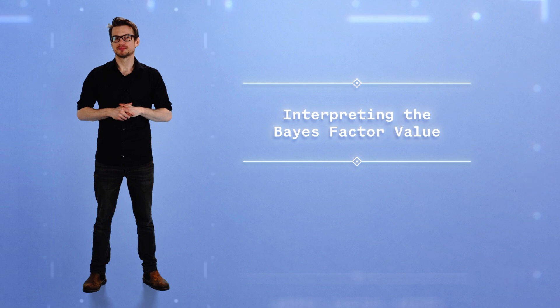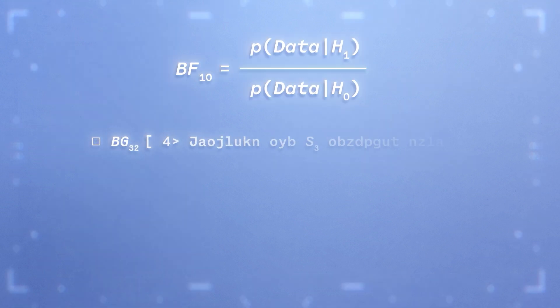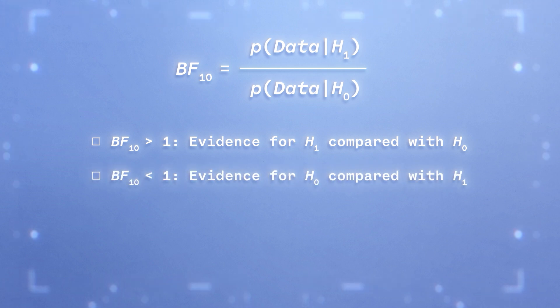The Bayes factor value can be interpreted in the following way. A Bayes factor value greater than 1 means that the data provide evidence for the alternative hypothesis compared with the null hypothesis. A Bayes factor value smaller than 1 means that the data lends support for the null hypothesis compared with the alternative hypothesis. Finally, a Bayes factor value equal to 1 means that the data are equally well explained by both the null and the alternative hypothesis.